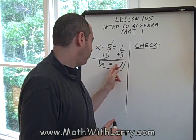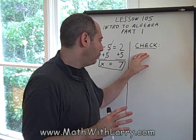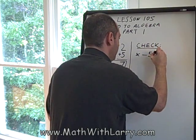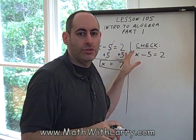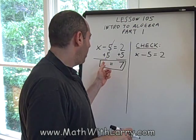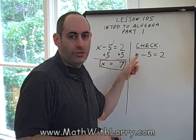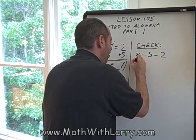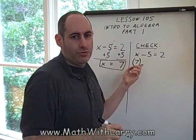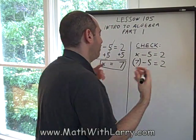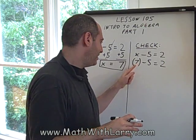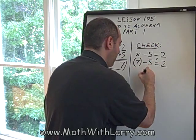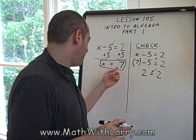Get into the habit of checking your answer. At the very minimum, check in your head; ideally, if there's time, check on paper — your teacher may require it. Always start by rewriting the original equation. Then substitute the value of x that you think is correct into the original equation — sometimes students call that plugging in. I'm going to substitute x equals 7, putting it in parentheses as a reminder that this is my test value. We put a question mark over the equal sign to show we're not yet sure. Here we can see that 7 minus 5 is 2, so the left side does equal the right side, meaning we got a correct answer.